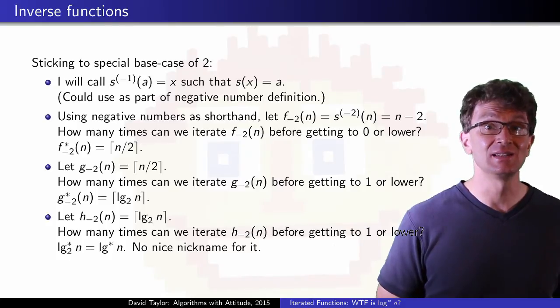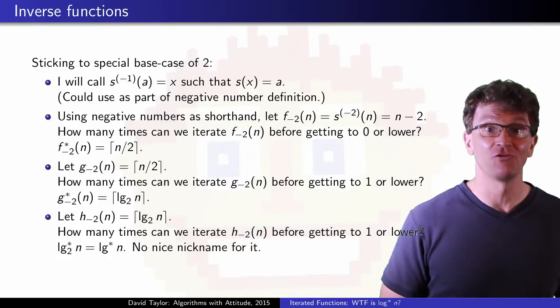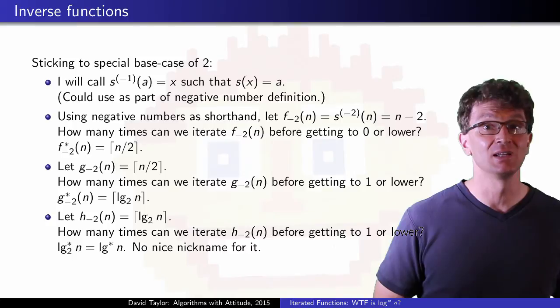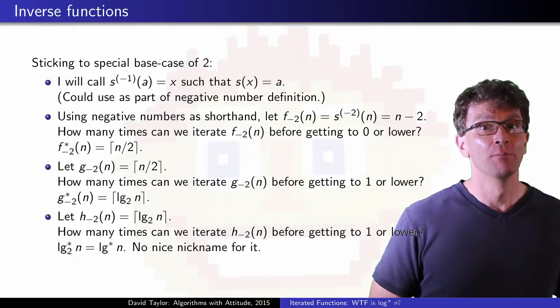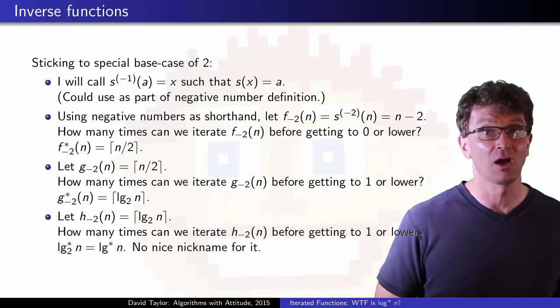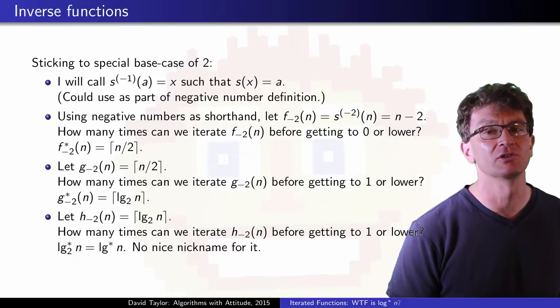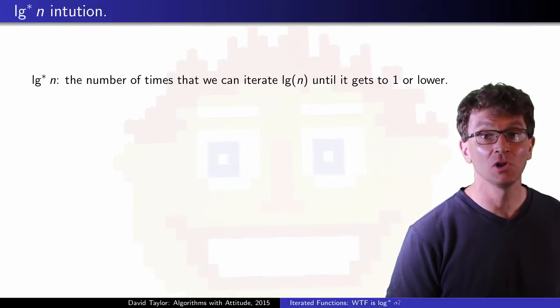Now, in the same way that we didn't need to use 2 as our base case for the fast-growing functions, we don't need to use it for these inverse functions either. We can generalize, but because log star of n is a function which does come up in computer science, I'll just concentrate on that here.